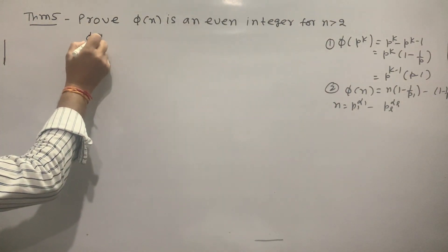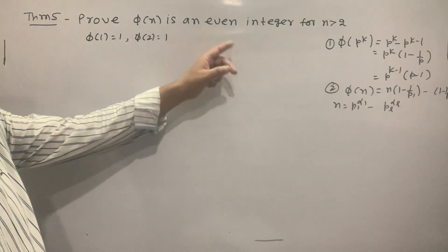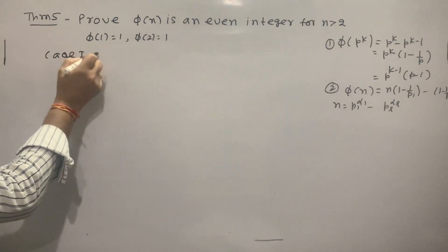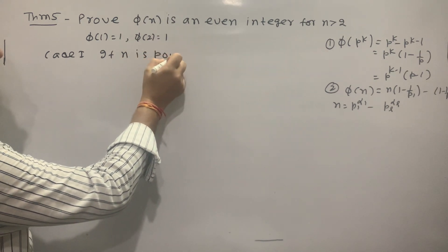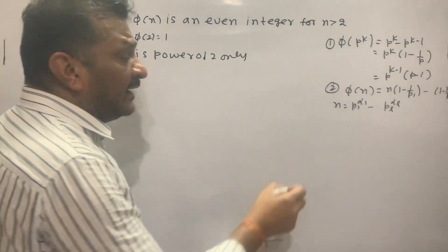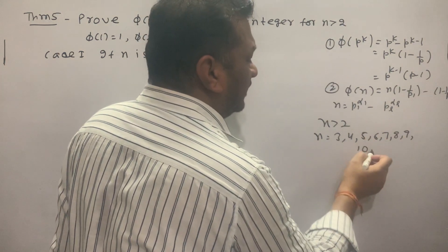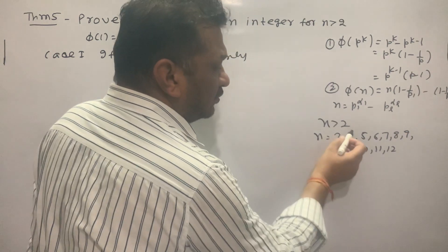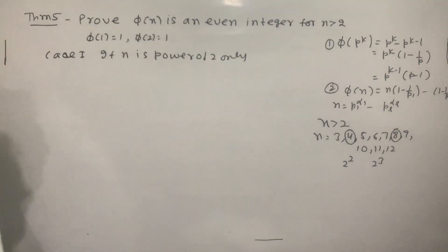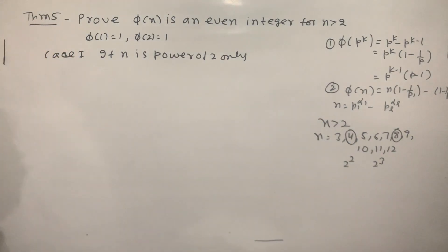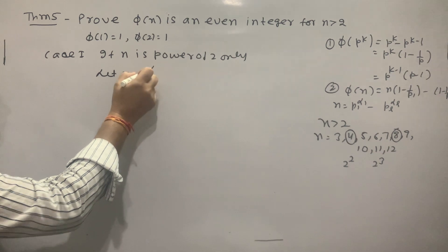Now, phi(1) = 1 and phi(2) = 1, so we need to prove this for n greater than 2. Consider when n is a power of 2 only — for example, 4 = 2^2, 8 = 2^3. These are all powers of 2. So let n = 2^alpha.